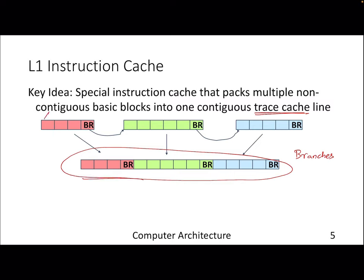What the trace cache does is combine all the non-contiguous addresses storing branch outcomes into a single cache line. For example, if block address X jumps to block address Y and then from Y to block address Z, from the cache point of view there are three different cache lines. But if you follow the instruction order and pack them into a single cache line, your L1 instruction cache will provide hits to all of them. This cache is used alongside the L1 instruction cache — not as a replacement, but as a helper to the L1 instruction cache.